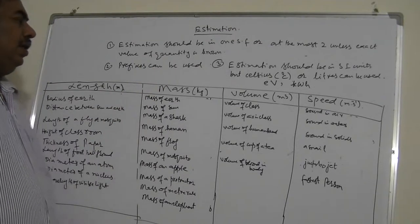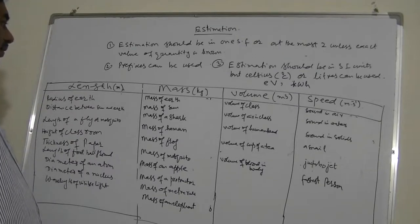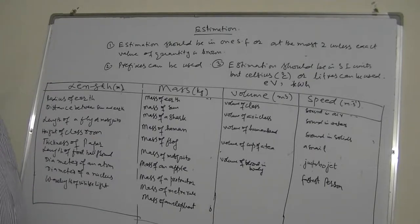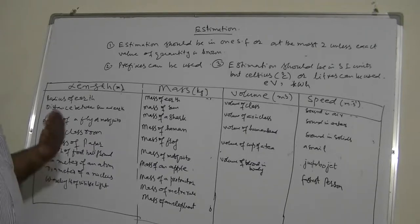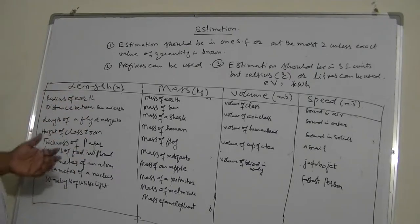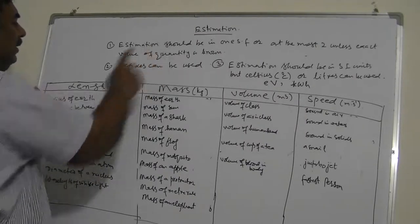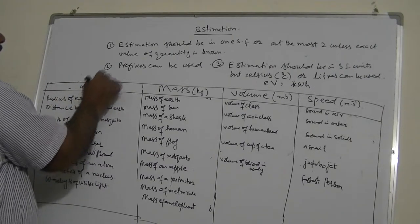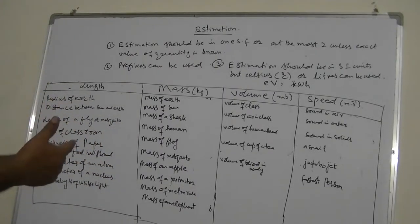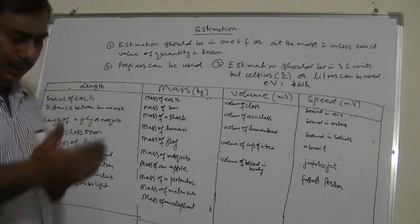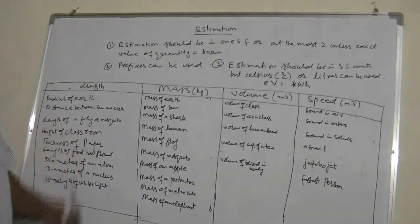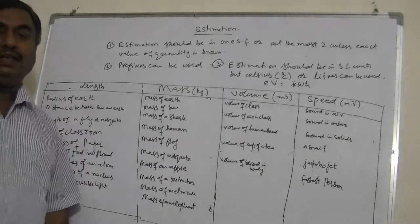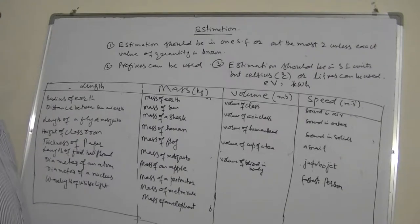Today we will talk about estimation. Students face problems while estimating physical quantities. There are usually five marks for estimation as the first question, but students miss one or two marks. Estimation should always be in one significant figure, or at most two, unless the exact value of the quantity is known. If you are not sure, go for one significant figure, at most two — not more than two significant figures.